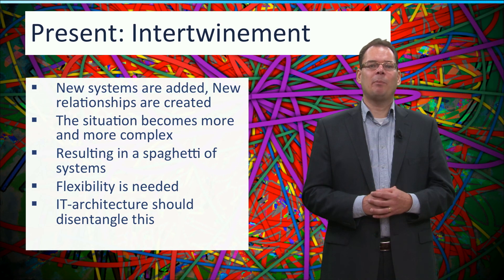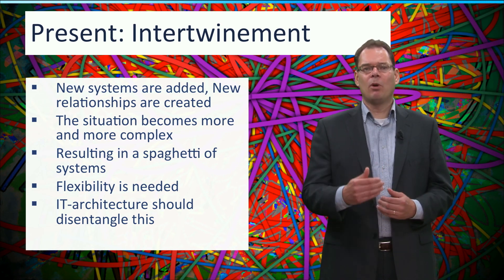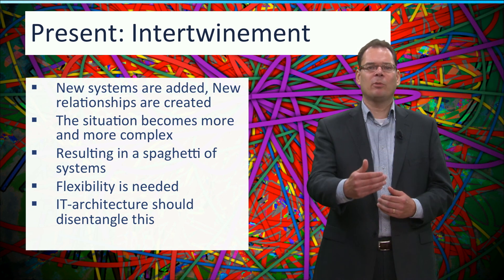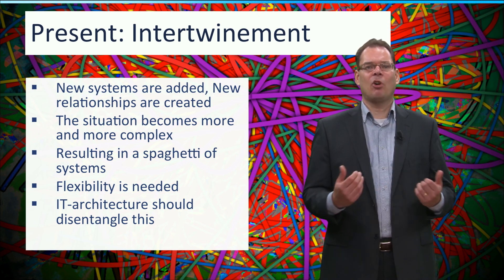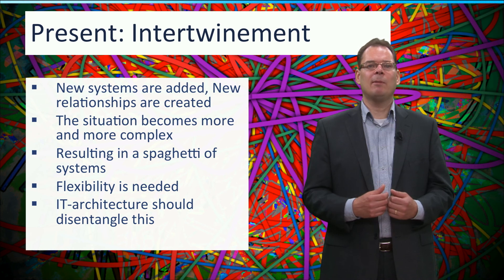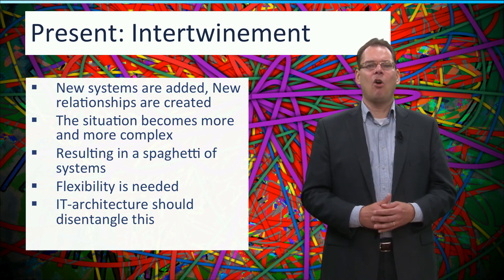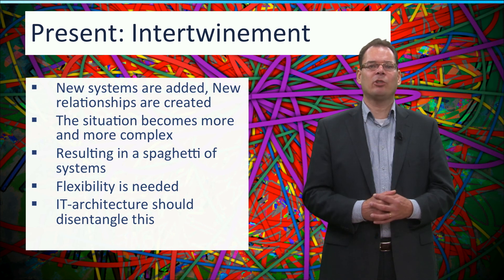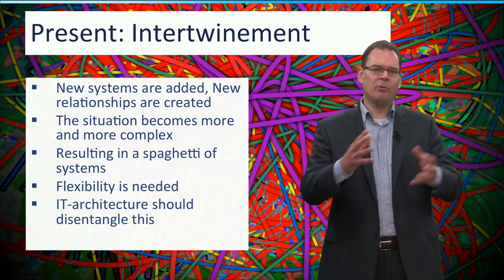The decisions made in the past are often made independent of each other. In this way more and more systems become part of the IT landscape. These systems need to be interoperable to be able to exchange information with each other. Over time more and more systems are connected to each other, resulting in a spaghetti of systems.